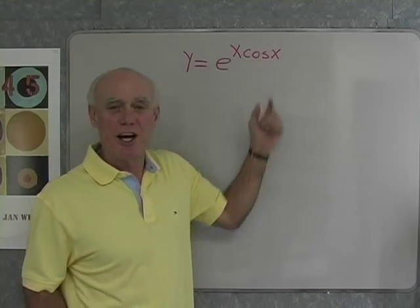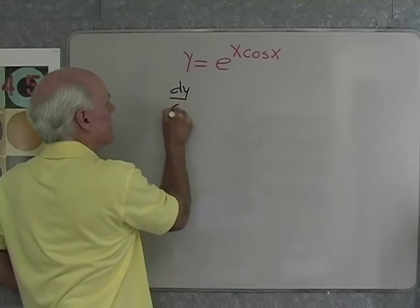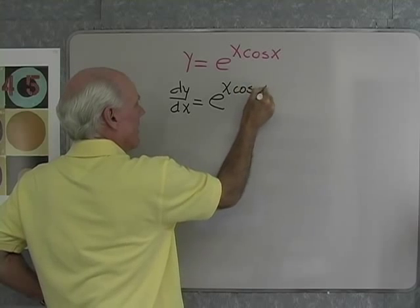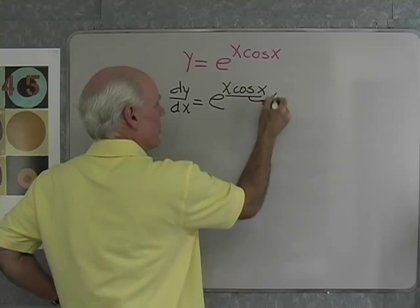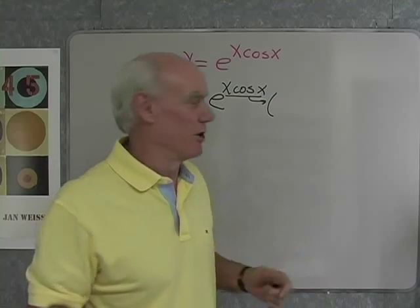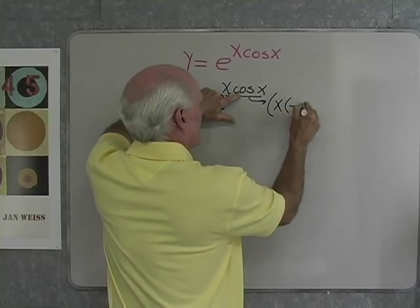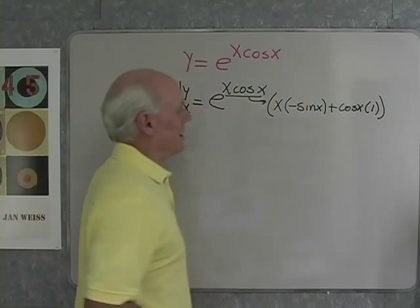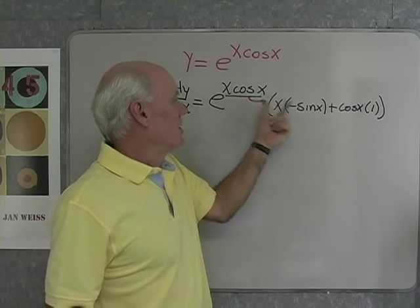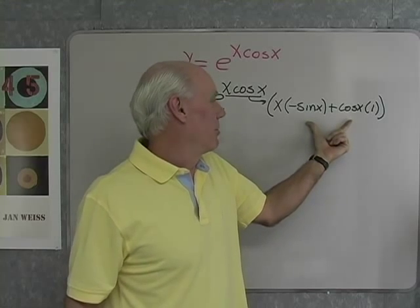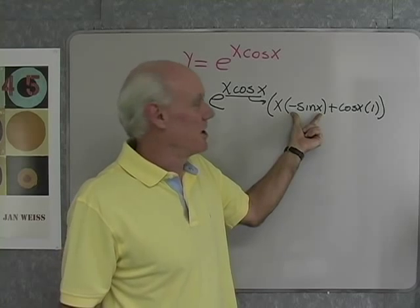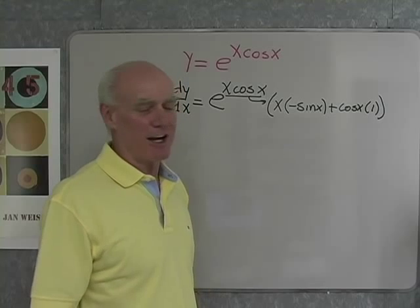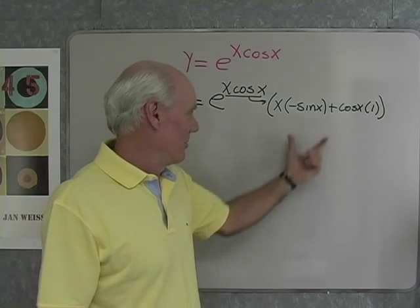Let's try another one: y equals e to the x cosine x. For dy/dx, differentiating e to any power gives e to that power times the derivative of the exponent — so I need to differentiate x cosine x using the product rule. That gives: x times the derivative of cosine x, which is negative sine x, plus cosine x times the derivative of x, which is 1. So dy/dx equals e to the x cosine x times the quantity negative x sine x plus cosine x.